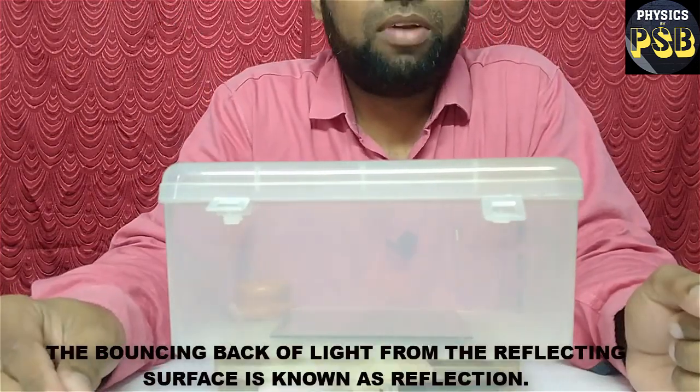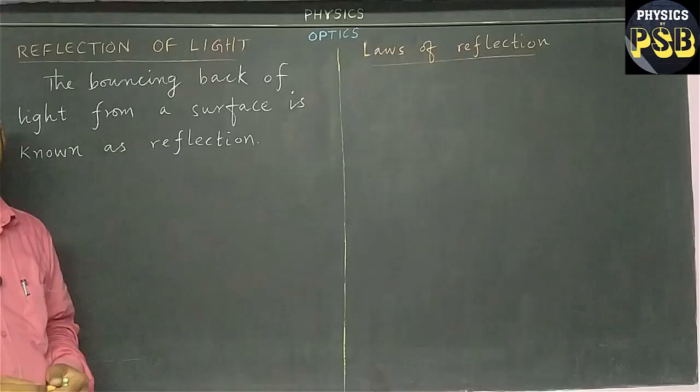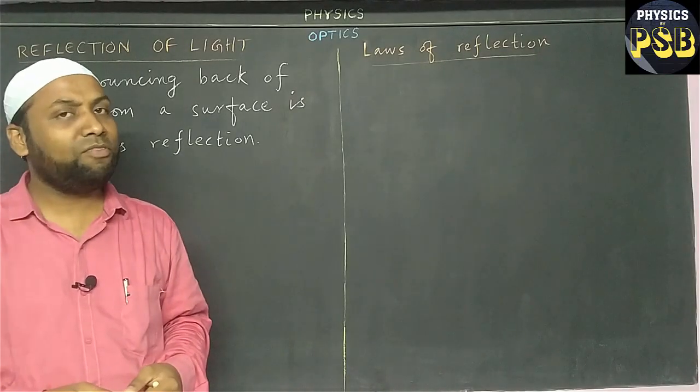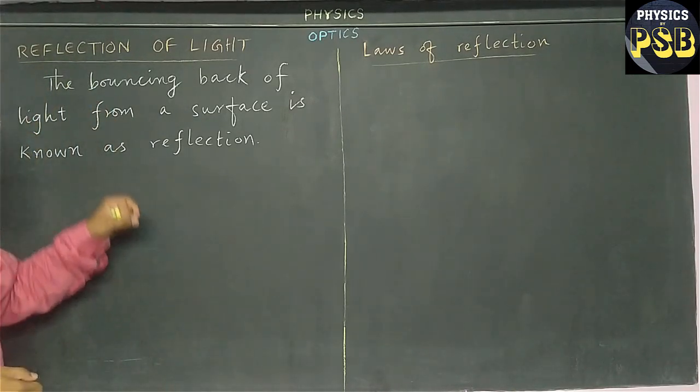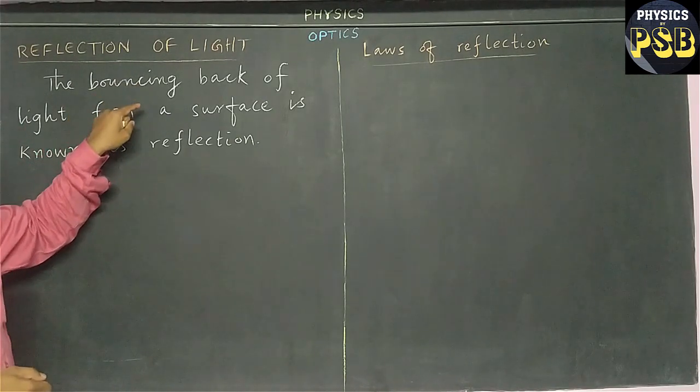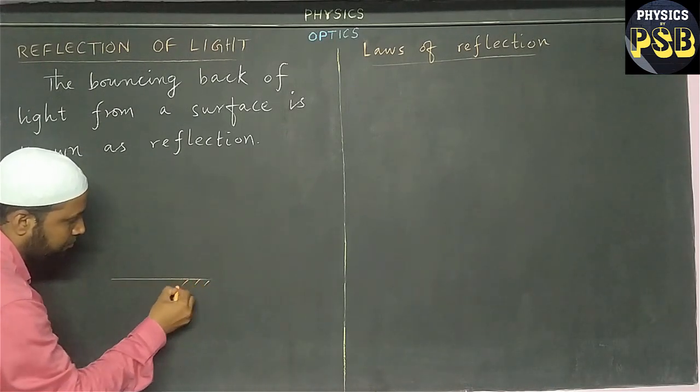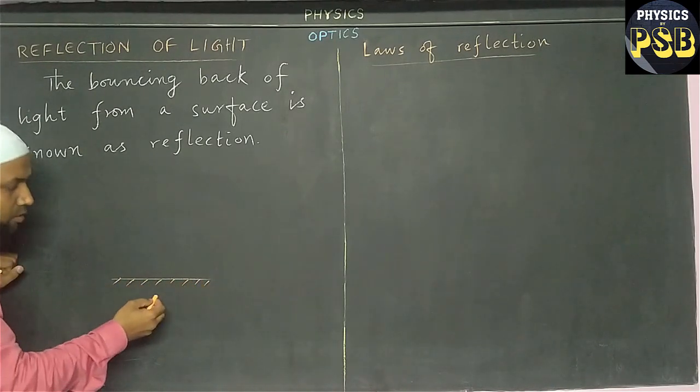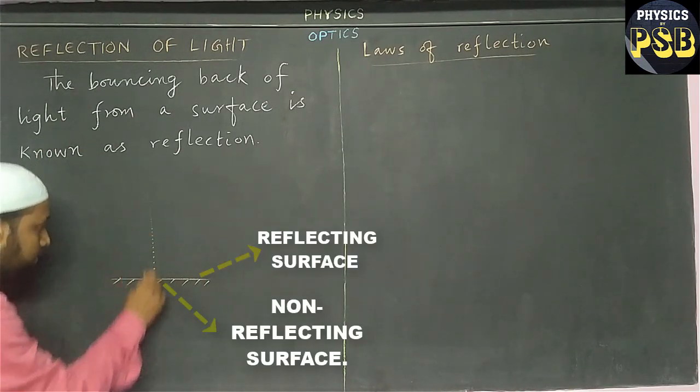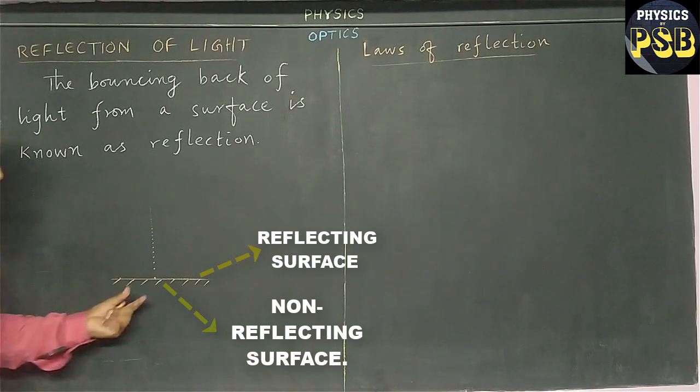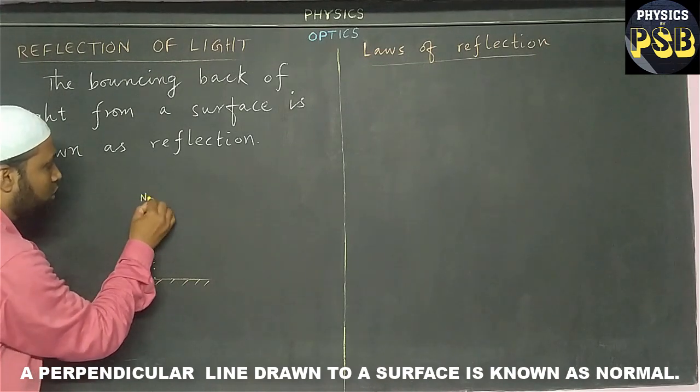The bouncing back of light from a reflecting surface is known as reflection. Let me explain the theoretical part of reflection of light. As I told you earlier, it is a phenomena in which light bounces back from a surface. Let us consider a reflecting surface. This line, which is perpendicular to the reflecting surface, is known as normal.